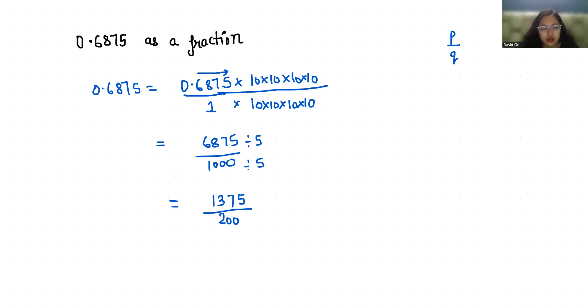Sorry, here is one more zero, so 2000. Now again with 5, so it gives us 5 times 2 is 10, 7 times 7 is 49... and 5 times 5 is 25, and this gives us 275 by 400. Again with 5, this gives us 55 by 80.